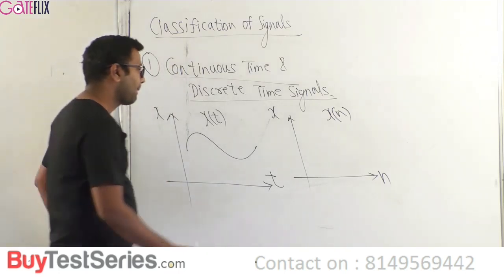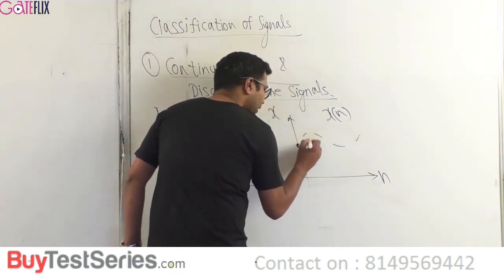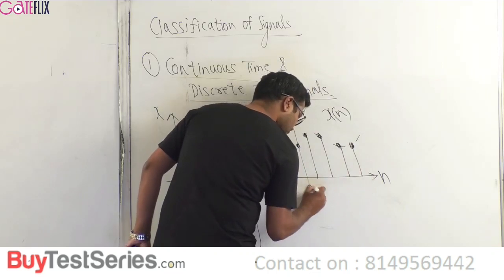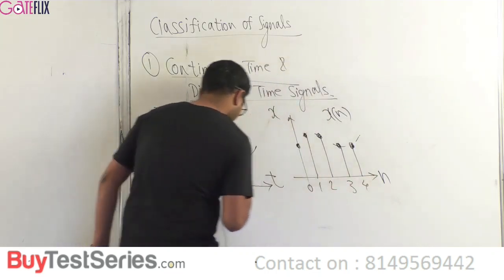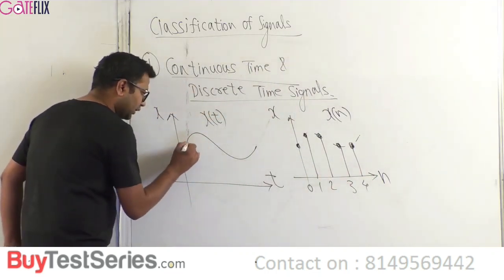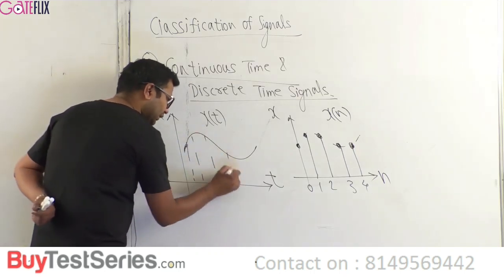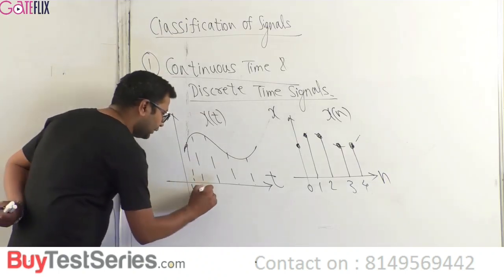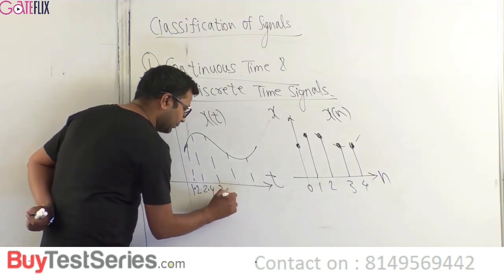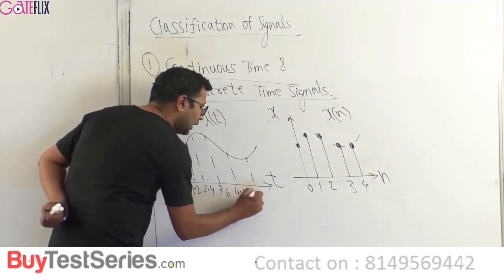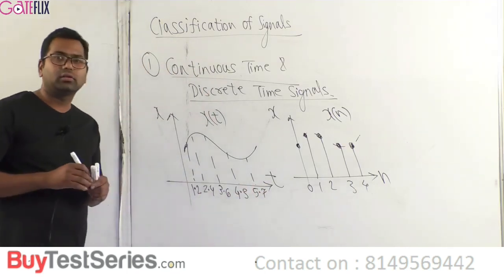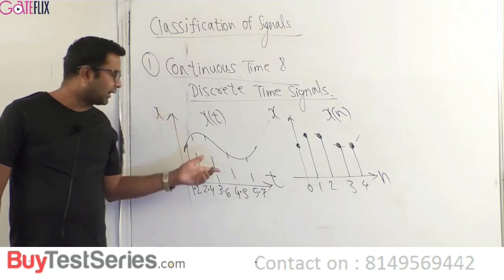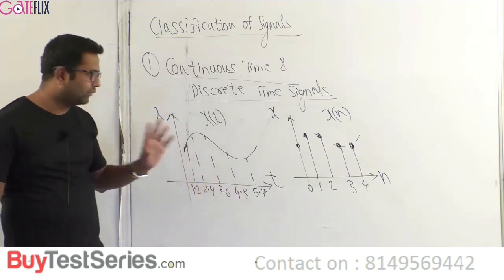In a continuous time signal, time t can take any value — for example, time can be 1.2, 2.4, 3.6, 4.3, or 5.7. The basic property of continuous time signal x(t) is that time t can take any value.